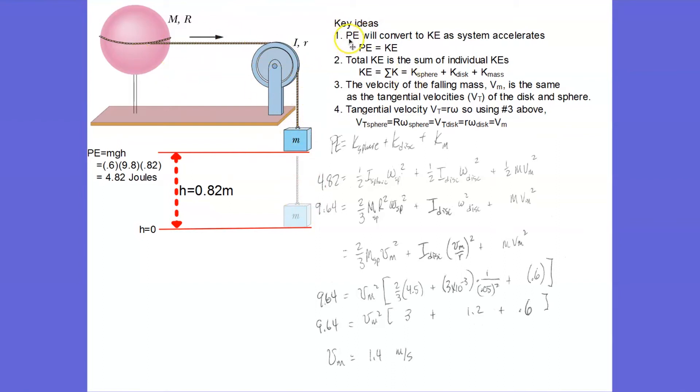So these are our key ideas. The potential energy will convert to kinetic energy. And the total kinetic energy is the sum of the kinetic energy of the sphere, the disk, and the falling mass.